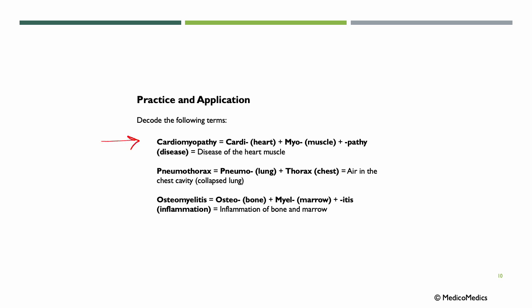Now let's do some practice and application. CARDIOMYOPATHY: CARDI means heart, MYO means muscle, PATHY means disease — so cardiomyopathy means disease of the heart muscle. PNEUMOTHORAX: PNEUMO means lung, THORAX means chest — so pneumothorax means air in the chest cavity, or collapsed lung. OSTEOMYELITIS: OSTEO is bone, MYEL is marrow, -ITIS is inflammation — so osteomyelitis means inflammation of bone and marrow.